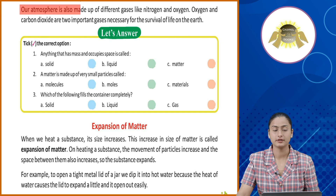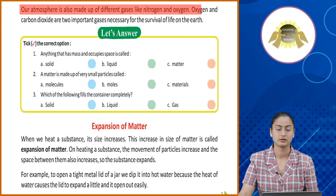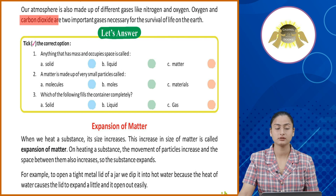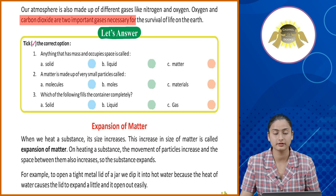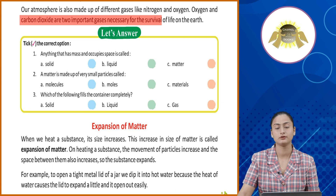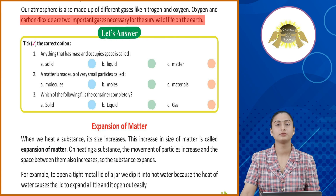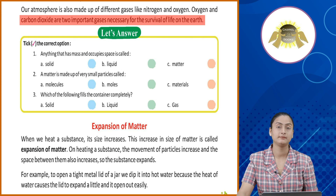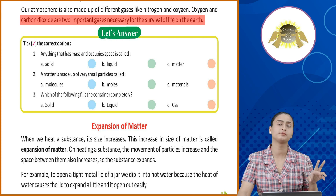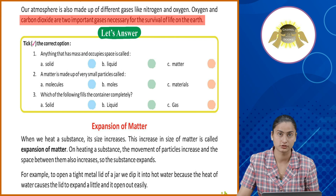Our atmosphere is also made up of different gases like nitrogen and oxygen. Oxygen and carbon dioxide are two important gases necessary for the survival of life on the earth. Hamaari jo atmosphere hai, usme bohat saari alag alag type ki gases hain. Usmein se jo do saabse zhaadha important hain woh hain nitrogen aur oxygen.